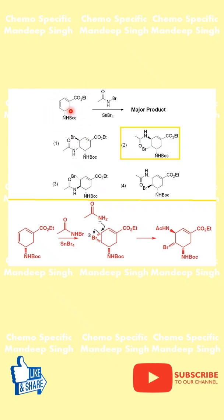Let's review this particular problem in which we have a diene with a Boc-protected amine group and an acetyl group, which is undergoing reaction with bromoacetamide in the presence of a Lewis acid, tin bromide. We are asked to predict the major product.